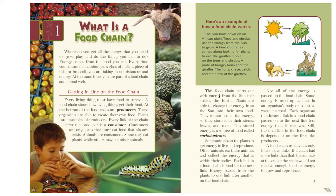This food chain starts with energy from the sun. Plants change the energy from the sun into their own food. They store it in their stems, leaves, and roots as carbohydrates. Some animals eat the plants to get energy to live and reproduce. Other animals eat those animals, collecting the energy within their bodies. Each link in a food chain is food for the next link, and energy passes from the plants through one link after another.